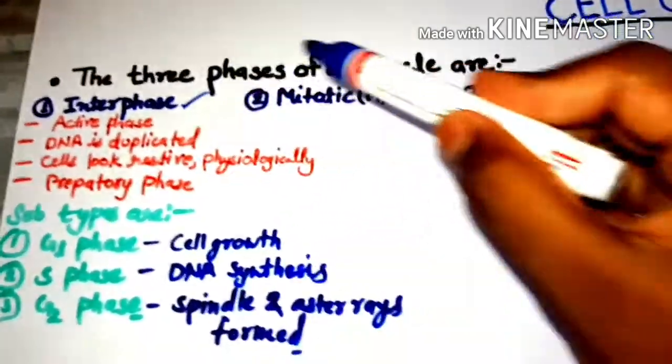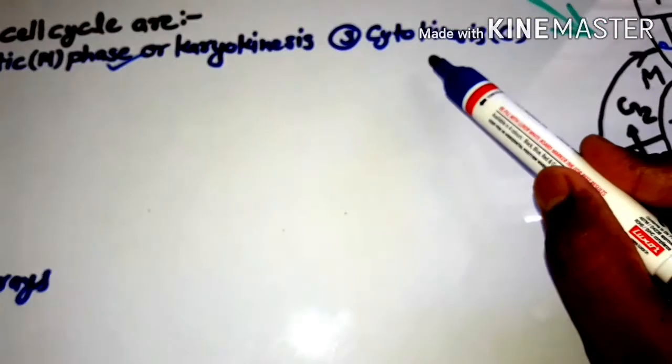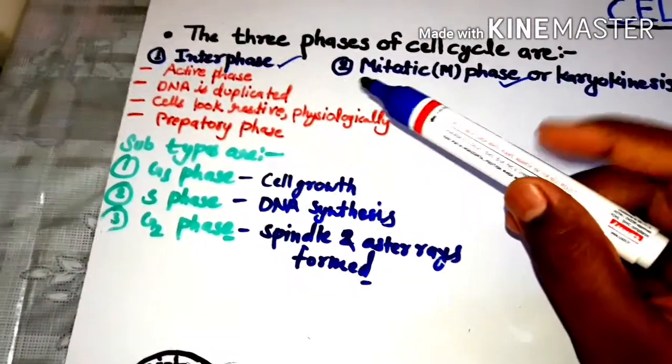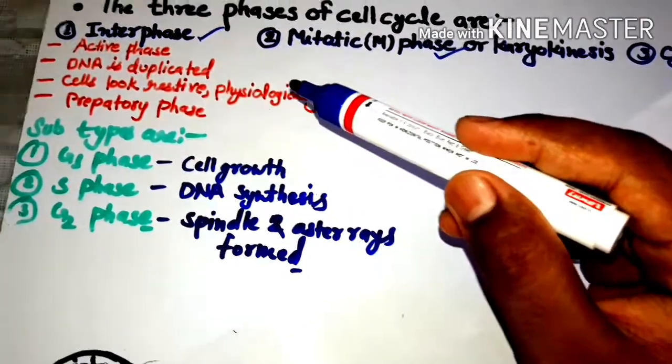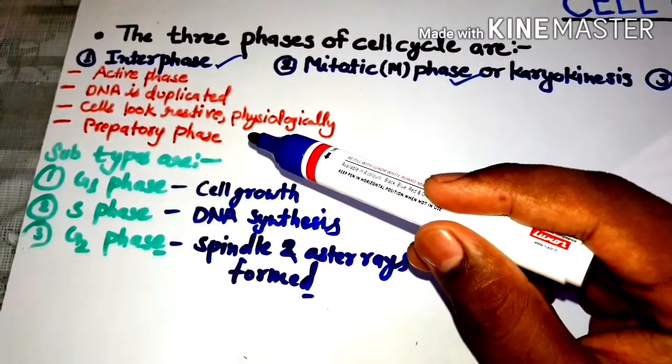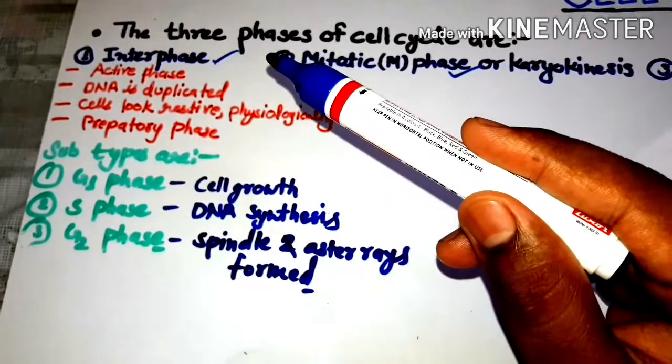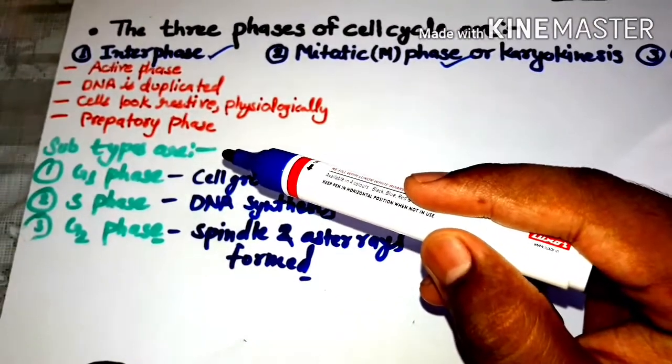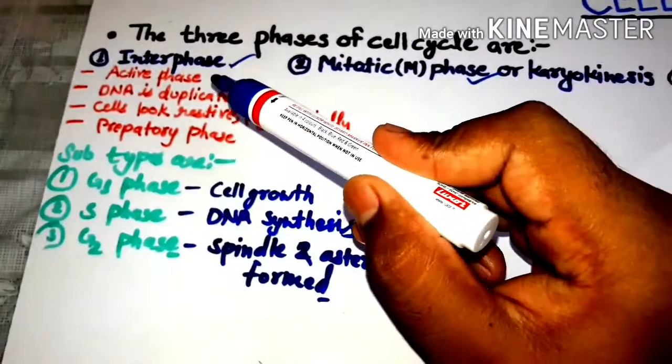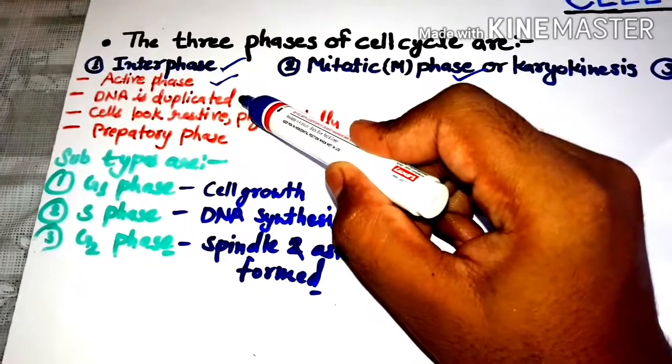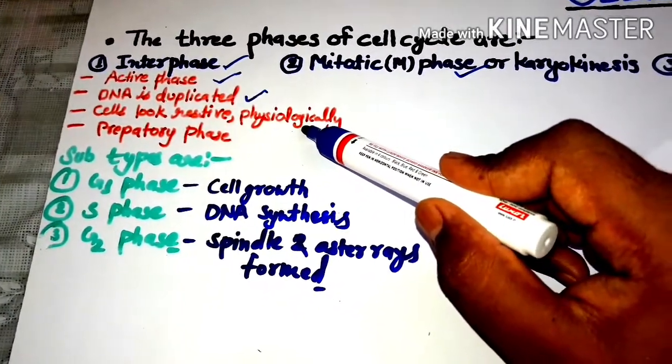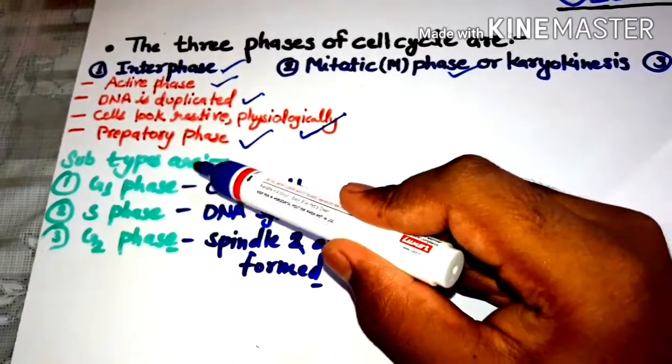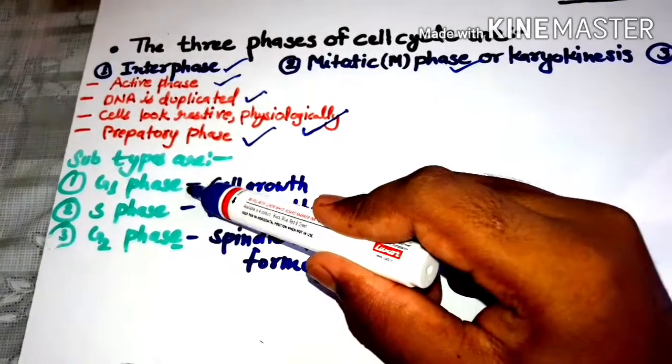In cell cycle there are three phases mainly. First is interphase, second is mitotic phase or karyokinesis, and third one is cytokinesis. Interphase is called a resting phase, but it is a very active phase in cell cycle. It looks physiologically restive, so we call it resting phase. DNA is duplicated in this phase. It is a preparatory phase.